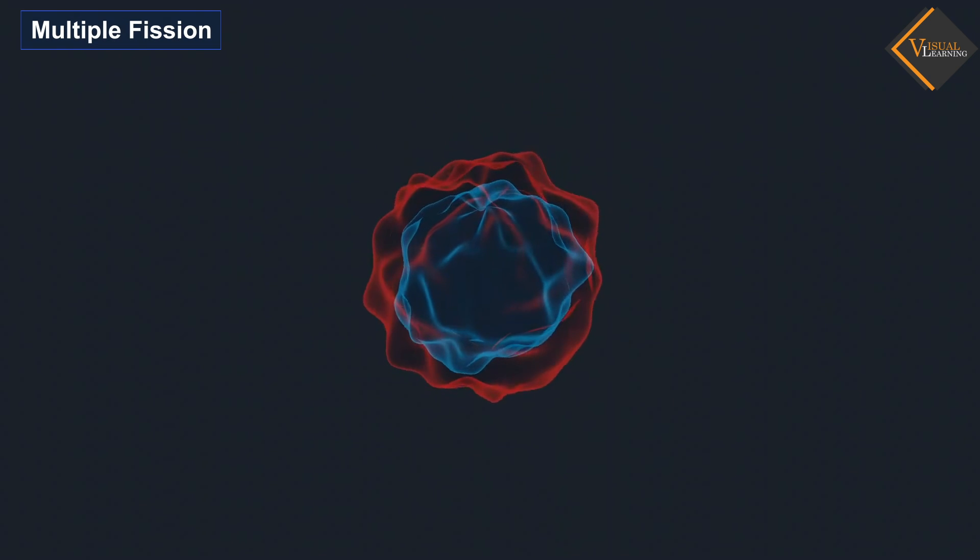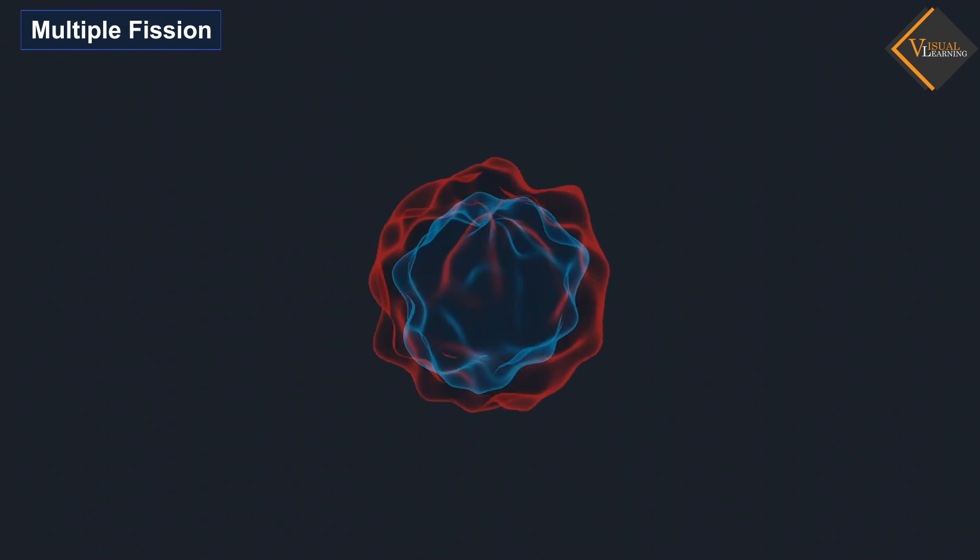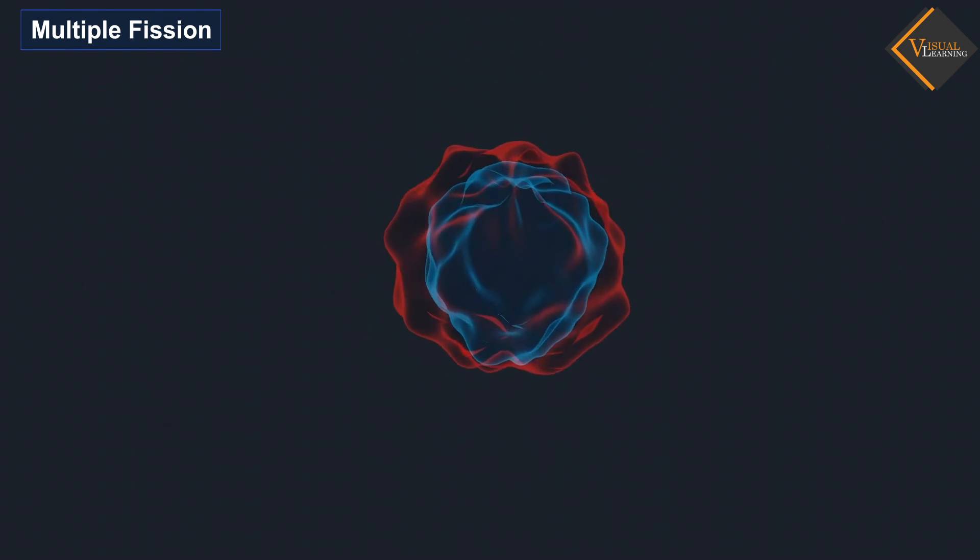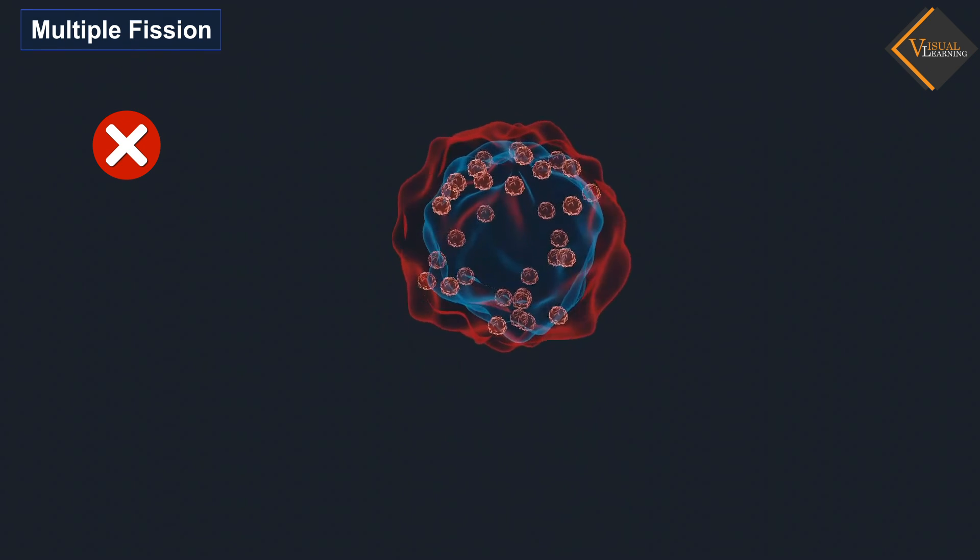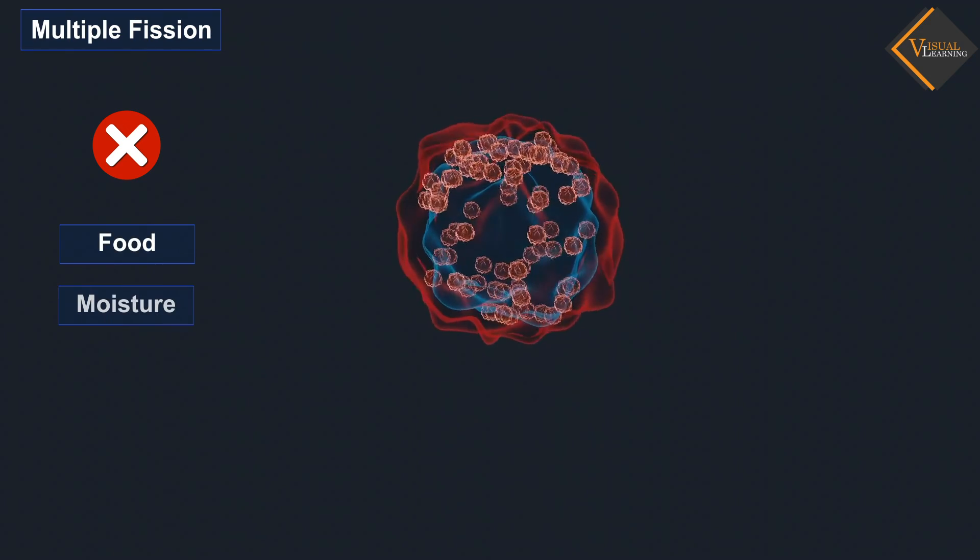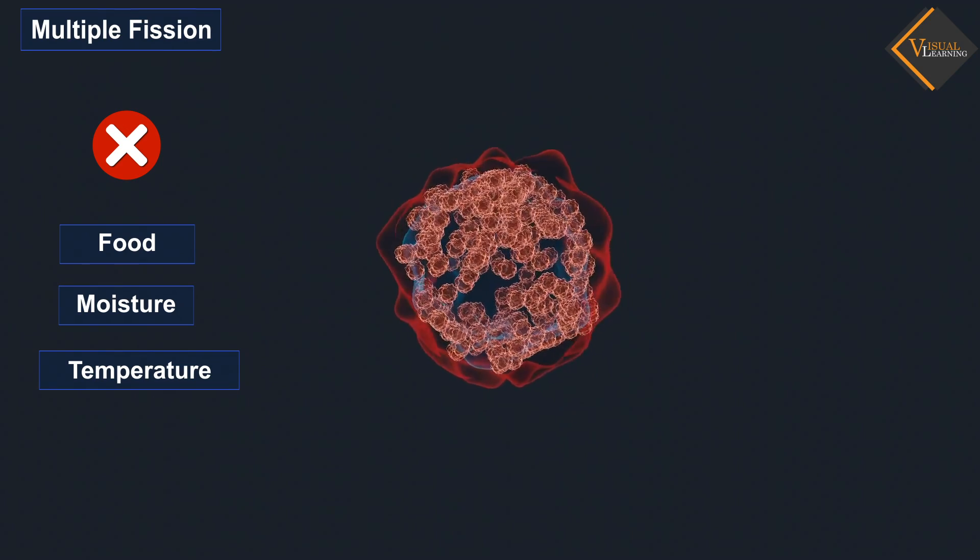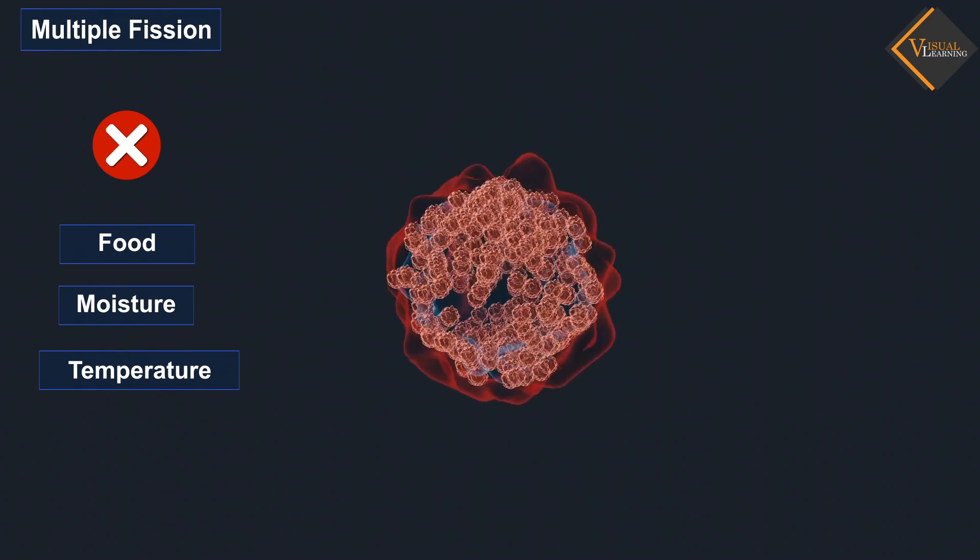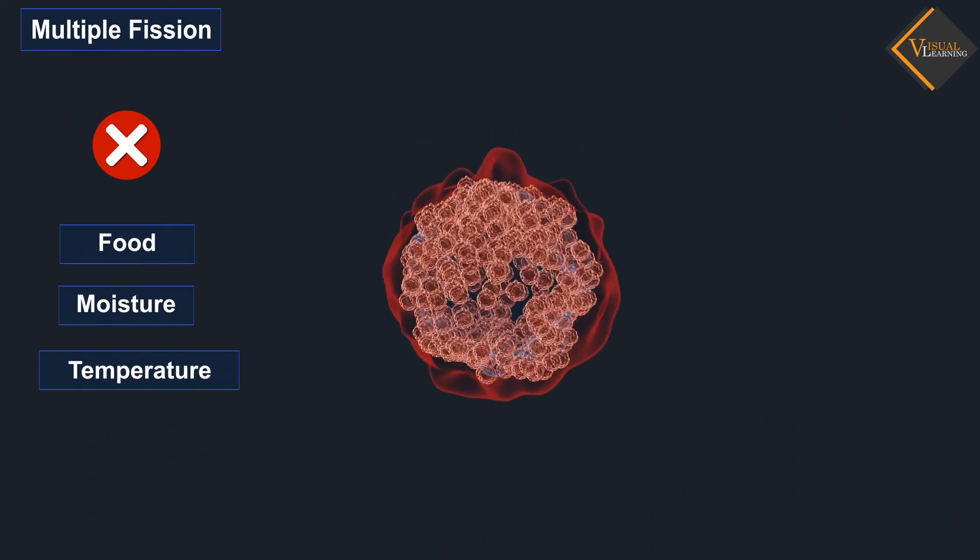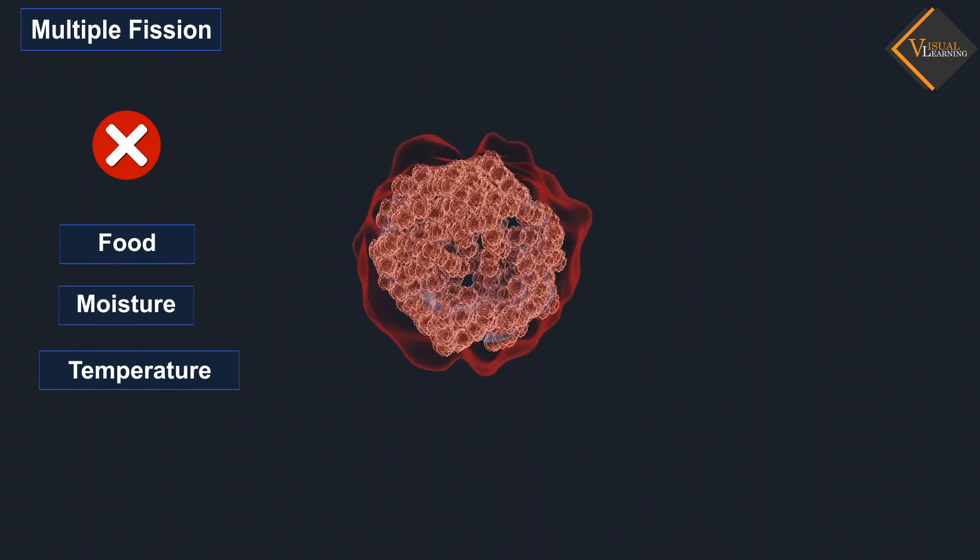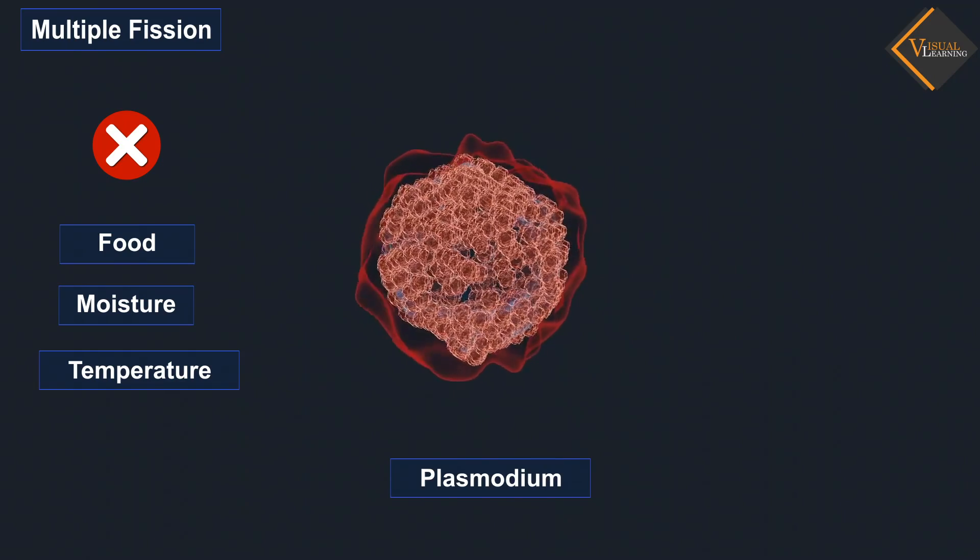Multiple fission: The unicellular organisms reproduce by multiple fission when the conditions are unfavorable with no proper amounts of food, moisture, and temperature. In this process, the organism forms a cyst around itself. The nucleus divides, and each daughter nucleus is surrounded by a membrane. Plasmodium undergoes this process.